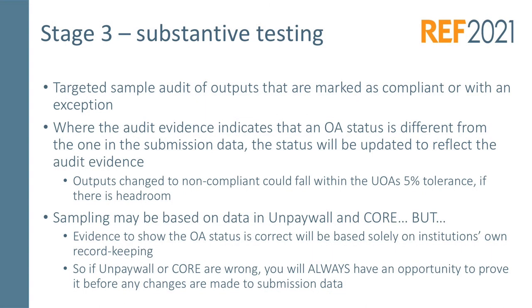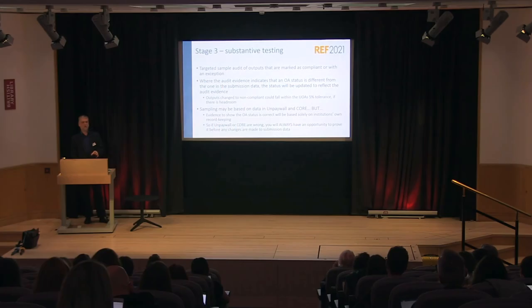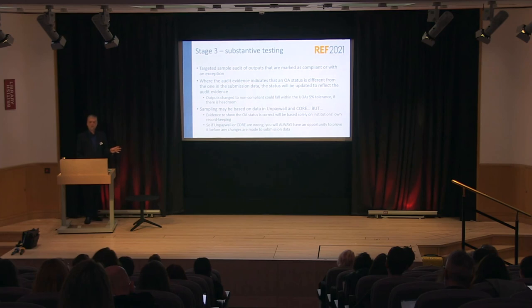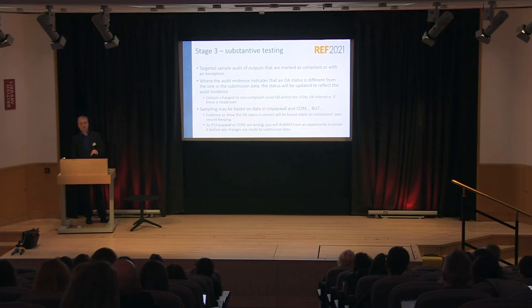Stage 3 is substantive testing - a targeted sample audit of outputs marked as compliant or with an exception. Where the audit evidence indicates that an OA status is different from the one in the submission data, the status will be updated to reflect the audit evidence. That can affect the 5% tolerance if we need to change some outputs to be non-compliant. Sampling may be based on data in Unpaywall and Core, but the evidence to show the OA status is correct will be based solely on your own record keeping, not Unpaywall and Core.